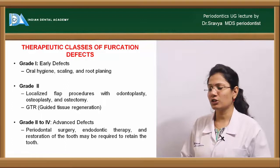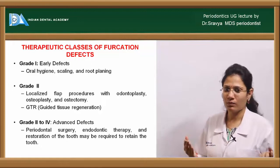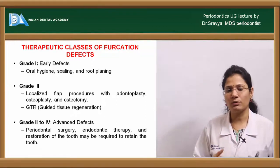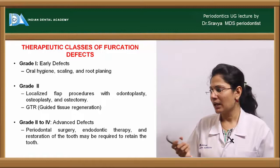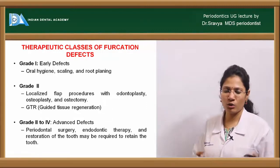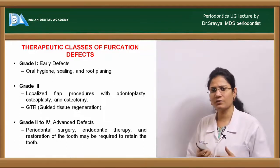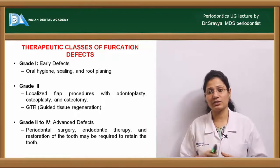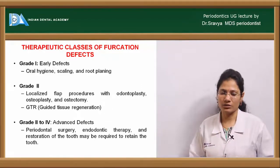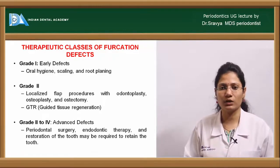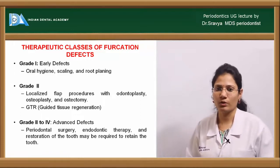For grade one furcation, treatment involves a proper oral hygiene protocol — scaling and root planing — and possibly odontoplasty or furcationoplasty. For grade two, localized flap surgery, odontoplasty, furcationoplasty, or a tunneling procedure may be used. Advanced grade two furcation involvement responds best to regenerative techniques including guided tissue regeneration (GTR) along with bone grafts.